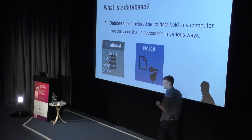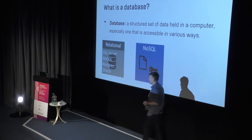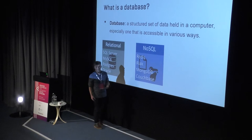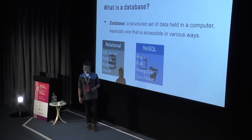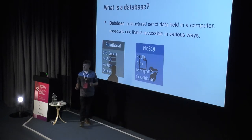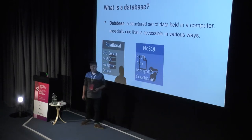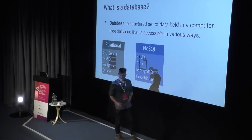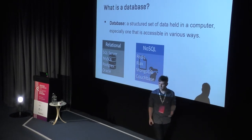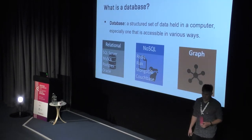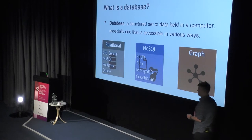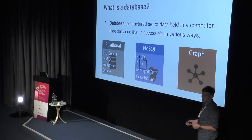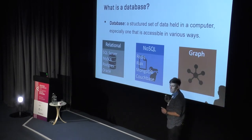Then we've got the second broad category: NoSQL. We've got document databases and lots of other types. They've been around maybe 20 years. We've got Redis, Mongo, Couchbase, and hundreds of others. They're very good at storing stuff in documents and key-value pairs — perfectly good for what they do. And then lastly we have graph databases. Those of you using NoSQL might class graph as NoSQL — and you're right — but since I'm doing a talk on graph databases, I'm shifting it into its own category.